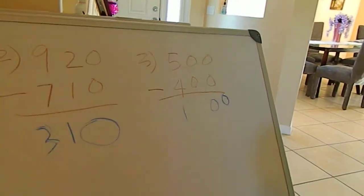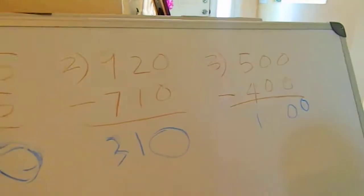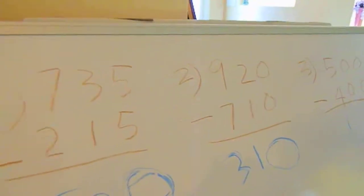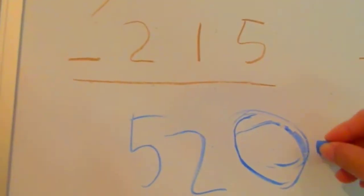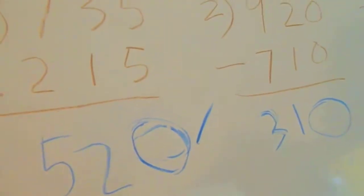Okay, let me see. Let me check. Okay. 735 minus 215 is what? 20. Look at this.